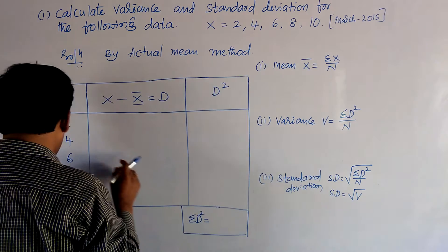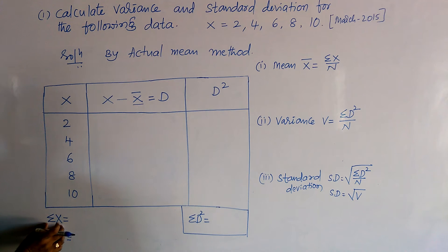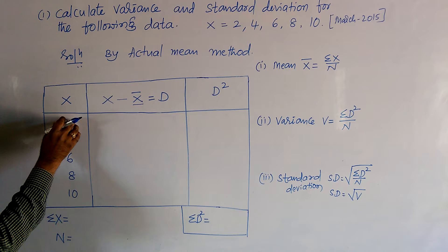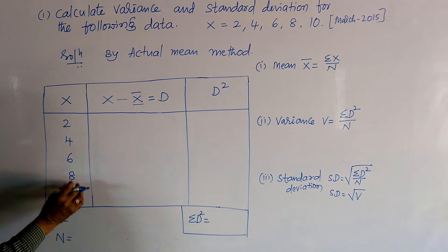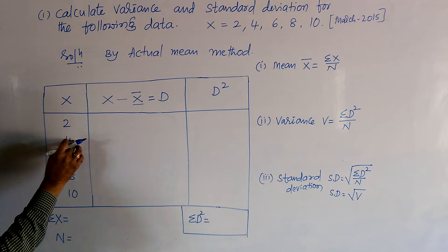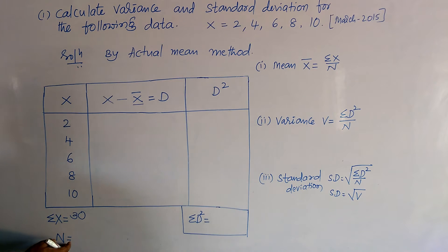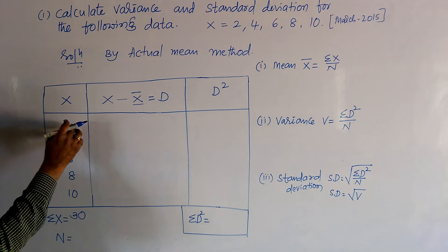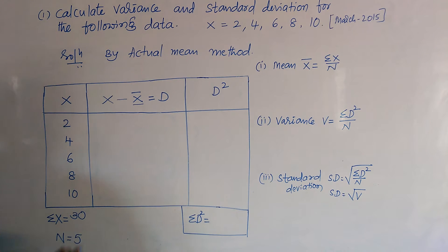The sum of x is σx, found by adding all scores: 10 plus 8 is 18, plus 6 is 24, plus 4 is 28, plus 2 is 30. So σx = 30. The number of scores n means: 1, 2, 3, 4, 5 — so n = 5.